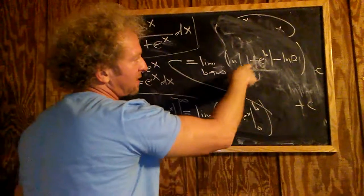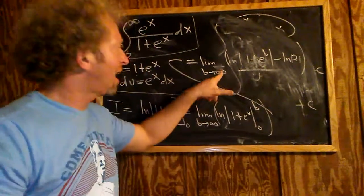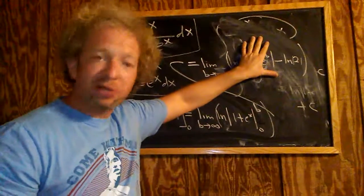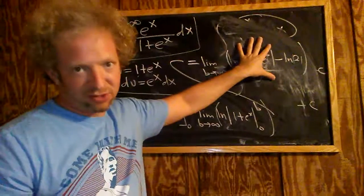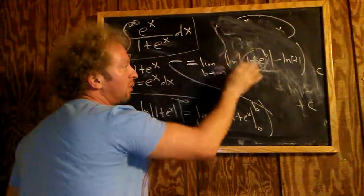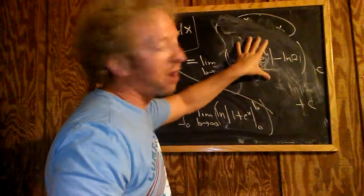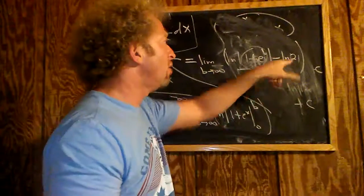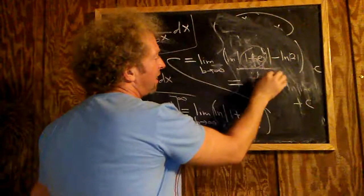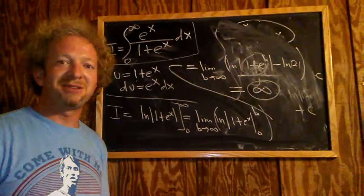Now when you take this limit, well this limit is infinity, right? Because what happens here, as b approaches infinity, e to the b approaches infinity. So 1 plus e to the b approaches infinity. So the natural log of that approaches infinity. So again, this quantity here is getting really, really, really, really, really big. So the natural log of that quantity is getting really, really, really, really big. Who cares about the ln 2? It's just a number. So this ends up being equal to infinity. So that is the answer. Hope that made sense.